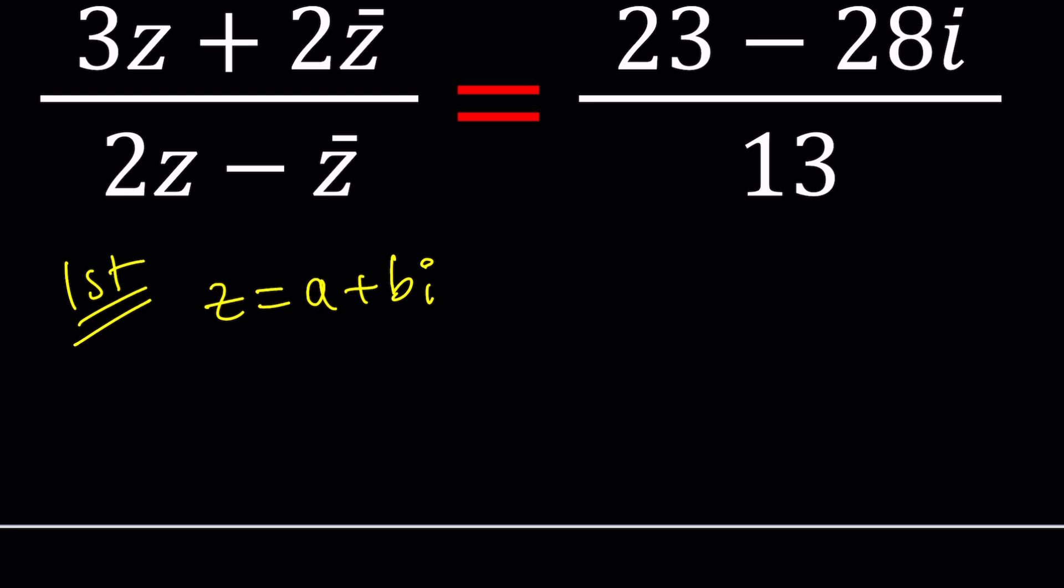We're going to go ahead and find z bar from here which is complex conjugate. It's a unique number such that when you add it to z or multiply by z you always get a real answer which is nice right.